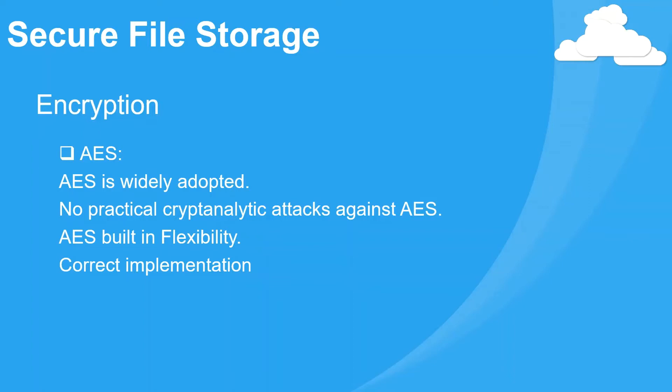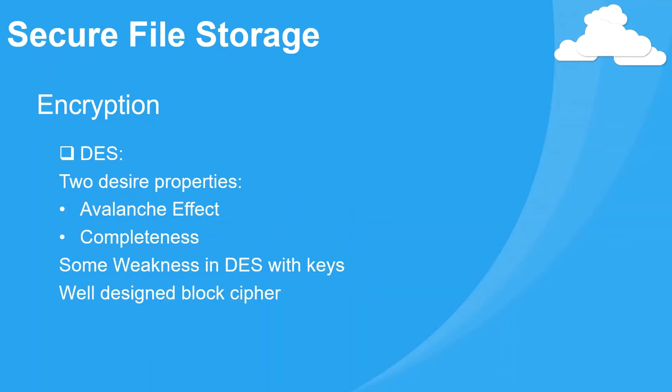However, AES security is assured only if it is correctly implemented and good key management is employed. For DES: DES satisfies both the desired properties of a block cipher, making it very strong. The first property is the avalanche effect — a small change in plain text results in a very great change in cipher text.